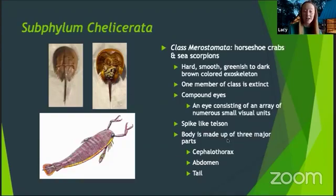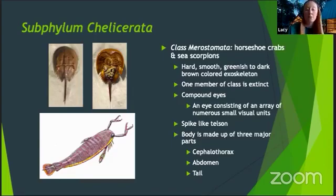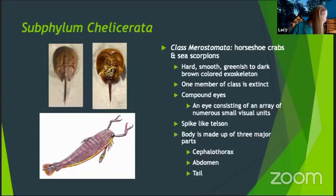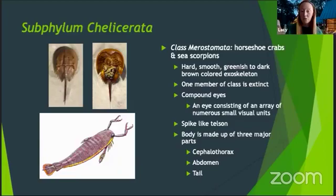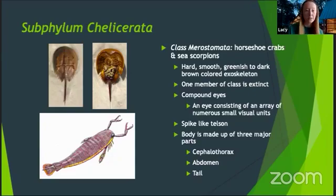The horseshoe crab's body is segmented into three parts: the cephalothorax - a big word meaning the head and body are fused together so they have no neck - the abdomen, which protects their organs and has appendages, and the tail. That covers subphylum Chelicerata, the chelicerates.